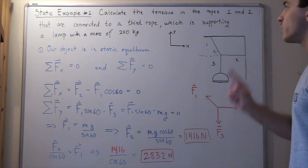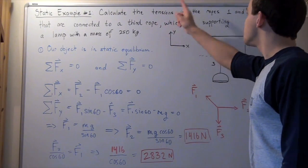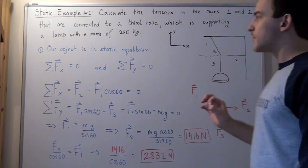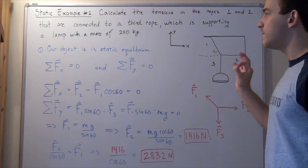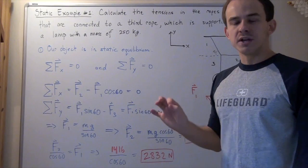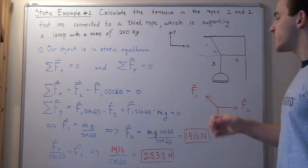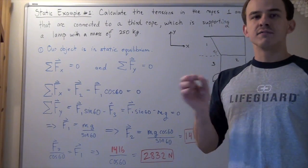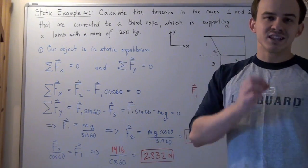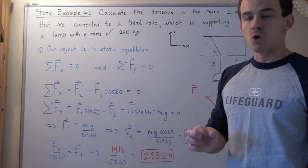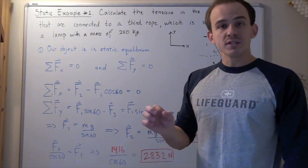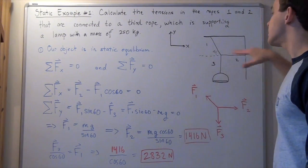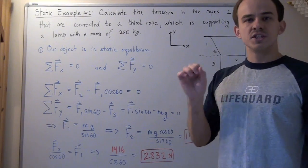We want to find or calculate the tensions in ropes one and two. Let's begin by assuming that our system is in fact in static equilibrium. That simply means our object is stationary — it's not moving and it's not rotating. Its velocity in every direction, both translational and rotational, is zero, and the net forces acting in every direction, along the x and y-directions, are zero.